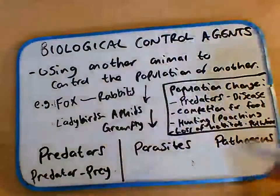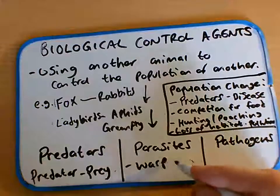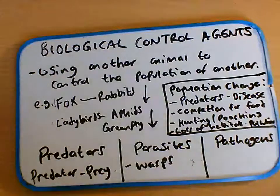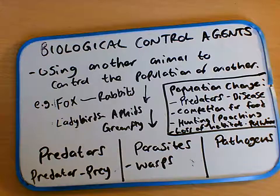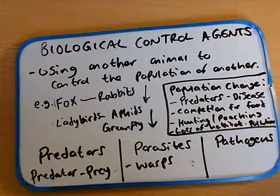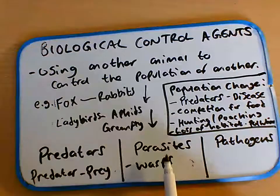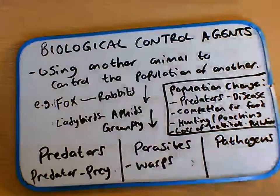We could also introduce a parasite. There are some parasitic wasps that can be released into the crop — they lay their eggs in the bugs and mites that infest the crop, and when the eggs hatch out they kill the actual pest. So using another organism, but this time it's a parasite — it's using the host for its own survival.